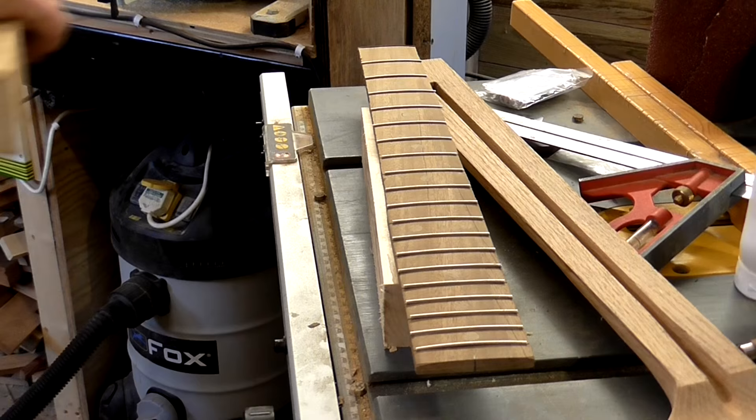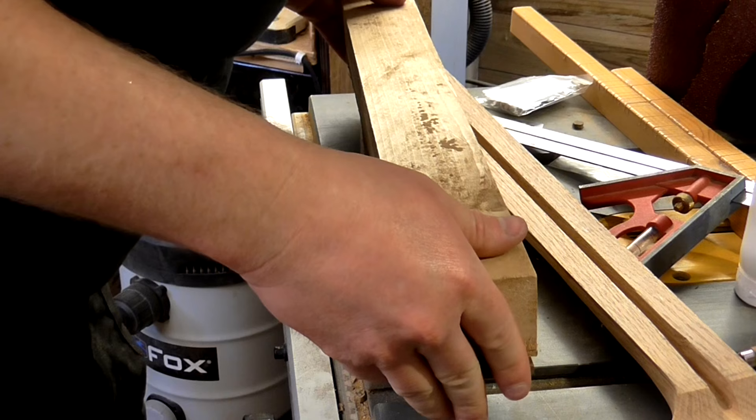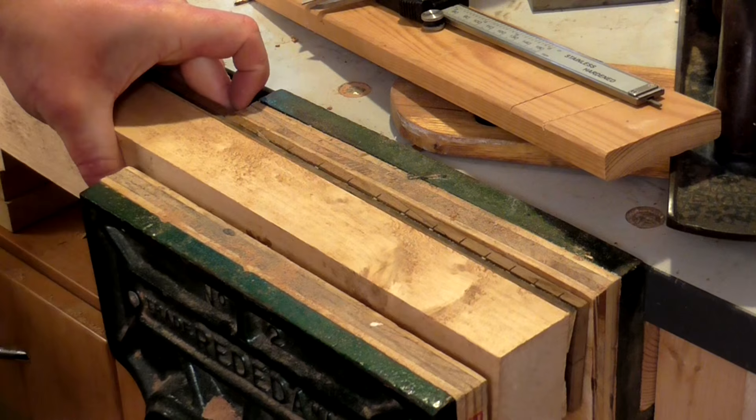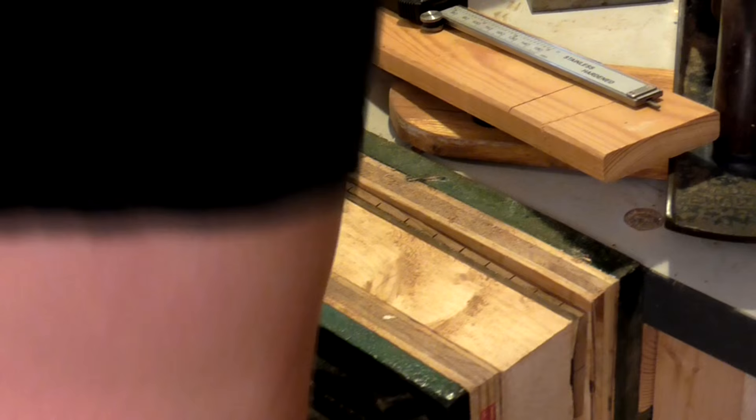With all of the frets installed I used the radius block pressed onto the fretboard and clamped this into the vise to squeeze everything tight and make sure all of the frets were properly seated. At the other end where the vise couldn't reach I just used a scrap piece of wood and some clamps but I forgot to film that part.